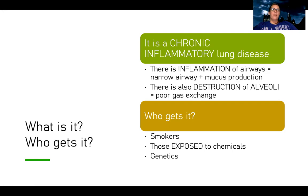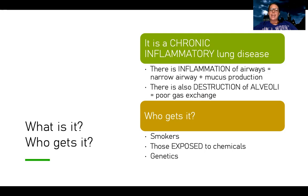COPD affects the airways as well, but it mainly creates destruction of the alveoli, which leads to poor gas exchange. The two problems that happen in COPD are: first, inflammation of the airway — the airways get irritated, they constrict and get narrow, and there's mucus production.